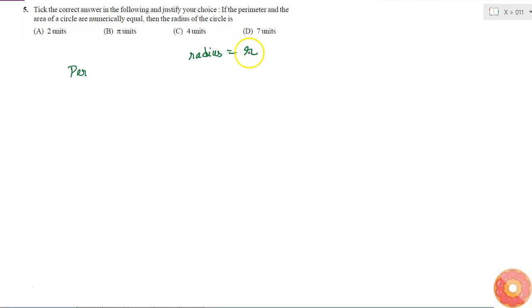I have to find r. What will be the perimeter? Perimeter is the same as circumference, which will be 2πr. And what is the area of the circle? Area of the circle is given by πr².